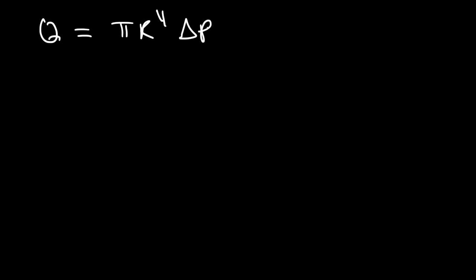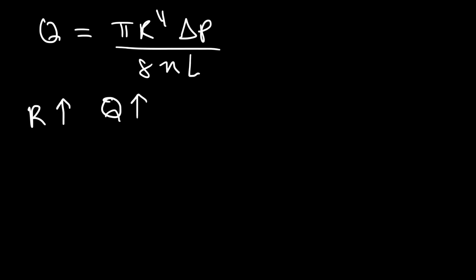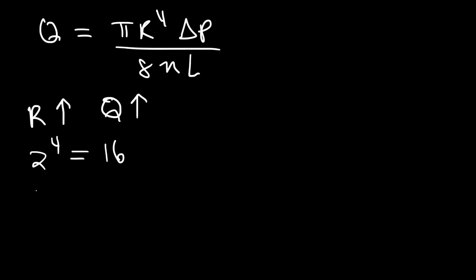Going back to the equation, where the volume flow rate is pi r to the fourth power times the change in pressure, P1 minus P2, divided by 8 times eta times L. We can see that if we increase the radius of the pipe, the flow rate will increase. If you double the radius of the pipe, the flow rate will increase by 2 to the fourth power. Q is proportional to the fourth power of R. So if we triple the radius, the flow rate will increase by 3 to the fourth power, which is 81.